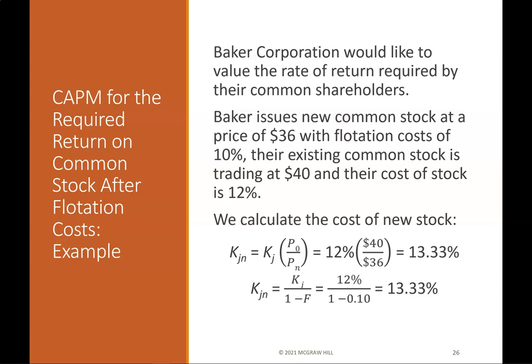CAPM flotation costs example: Baker Corporation issues new common stock at a price of $36 with flotation costs of 10%. Their existing common stock is trading at $40 and their cost of stock is 12%. The cost of new stock KJN = KJ / (1 − F) = 13.33%.